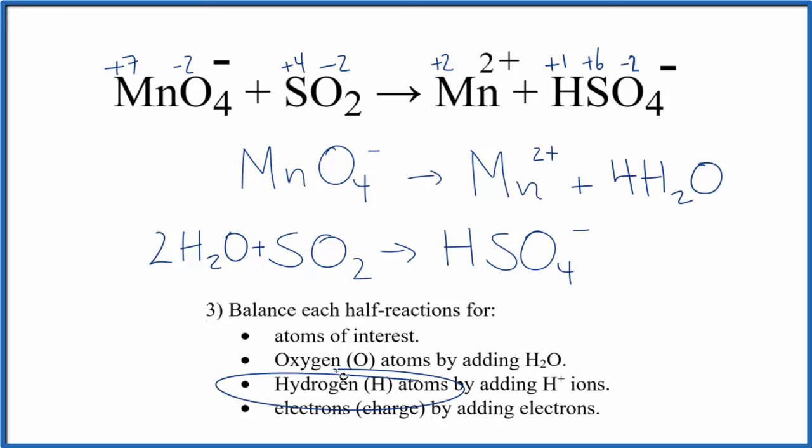Now we can balance the hydrogen atoms. We're in acidic medium here, so we're going to add hydrogen ions to balance out those hydrogen atoms. We have eight here, so we need eight hydrogen ions here. We have two times two, four here, and we only have one here. Let's add three on this side.